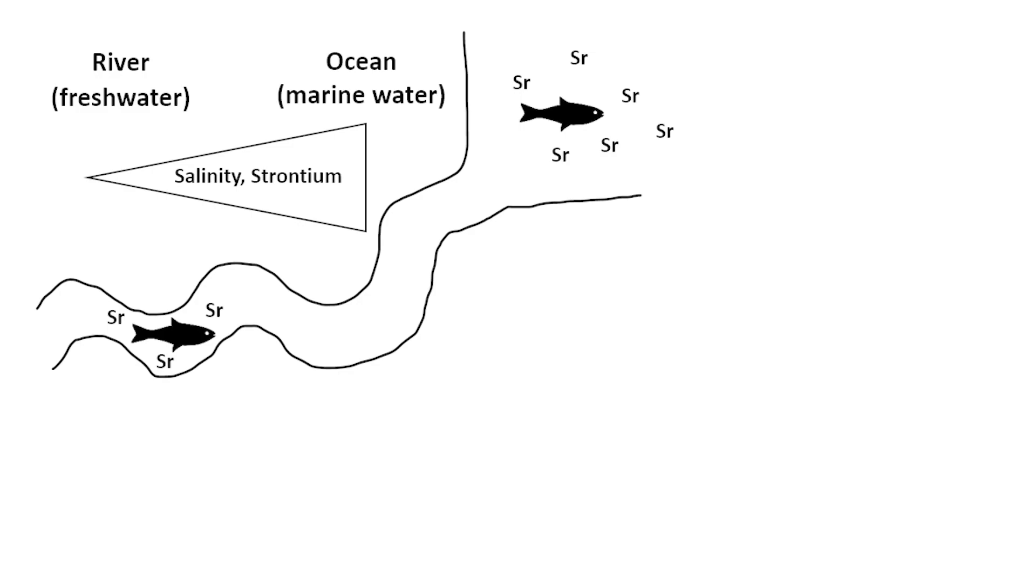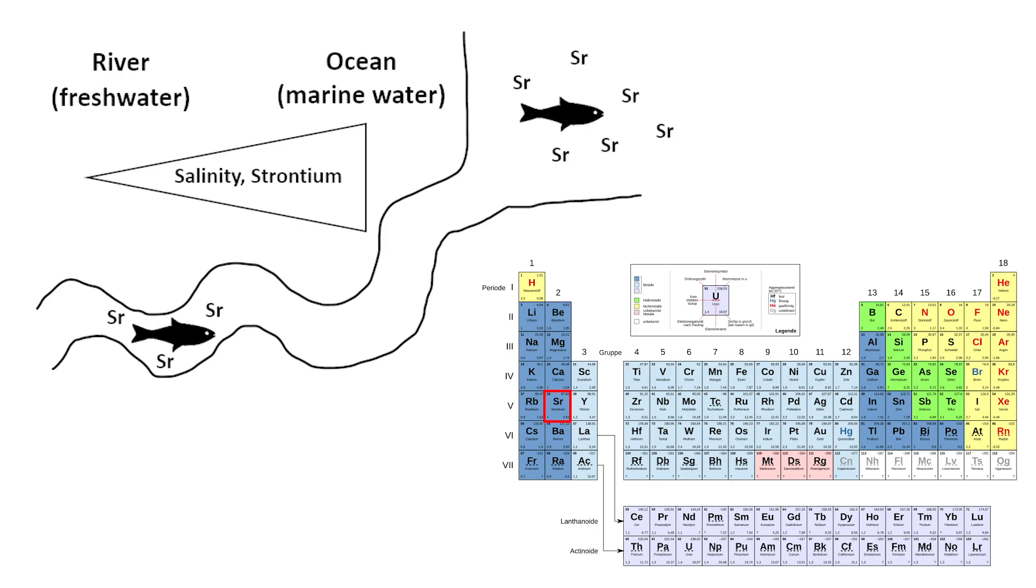But how can geochemistry help us to shed light on thelodont migration? We can use the element strontium as a proxy for the environment an organism inhabited during different life stages.